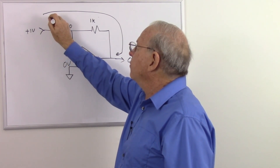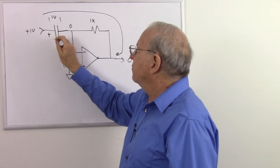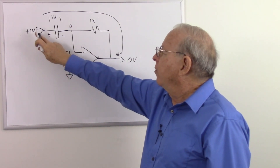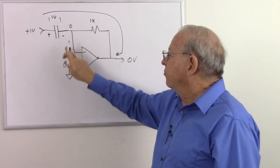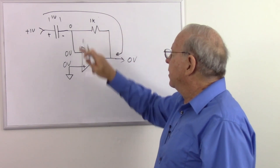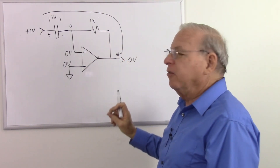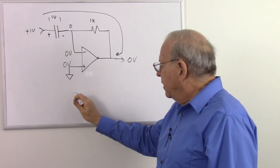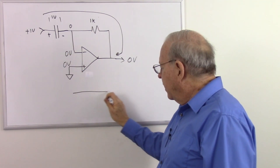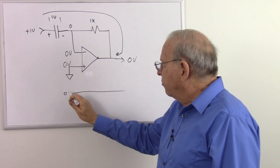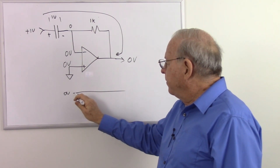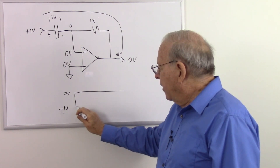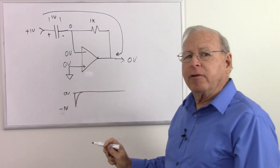So now there's one volt stored across the capacitor, positive to negative, but no current flowing. The output is back to zero volts. What we observed over time was: output started at zero, jumped down to minus one volt when we applied the step, then decayed back to zero — a single spike.